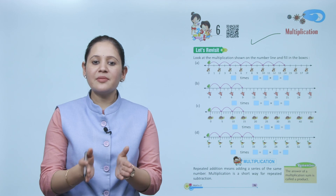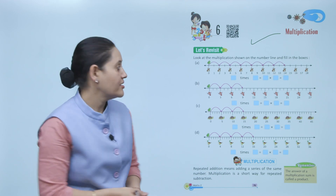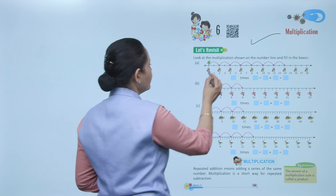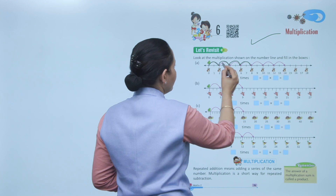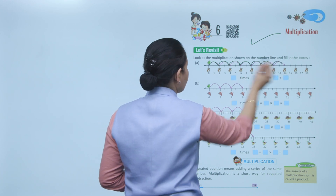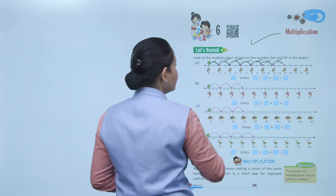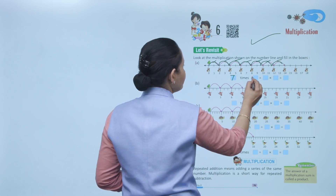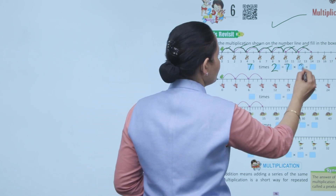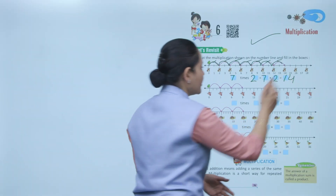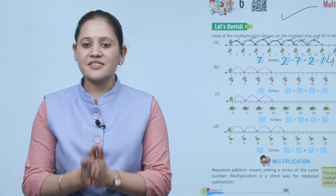Let's revisit. Look at the multiplication shown on the number line and fill in the boxes. Here we have 2, and there are 7 jumps — 1, 2, 3, 4, 5, 6, 7 — meaning 7 times 2, that is 7 into 2, which equals 14. So 7 times 2 means 7 into 2, that is 14.